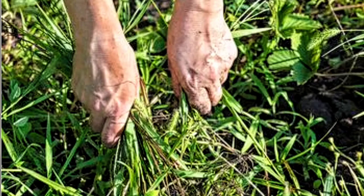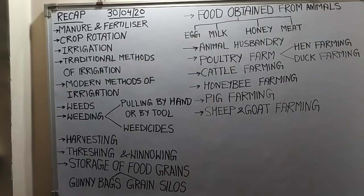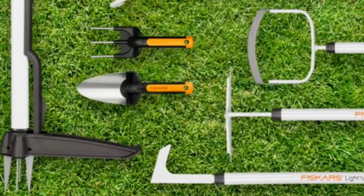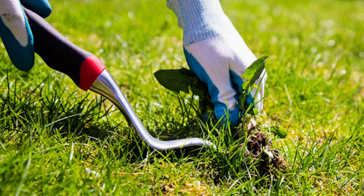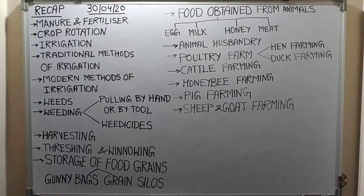Weeding can be done by two methods. First, weeds can be uprooted by pulling them with the hands. Second, they can be removed by using a weeding tool called a trowel — in Hindi it is called a 'khurpa'. As you can see in the pictures, there are many tools to remove the weeds, and the next picture shows how weeds are removed from the root using such a tool.